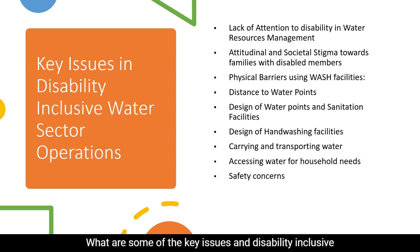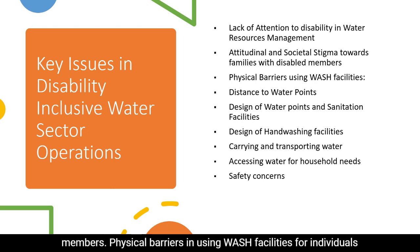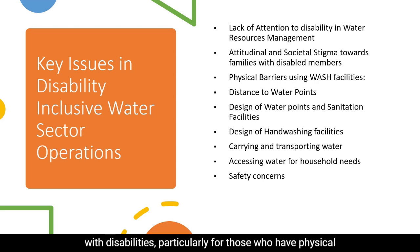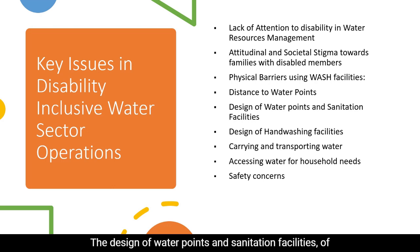What are some of the key issues in disability-inclusive water sector operations? These include lack of attention to disability in water resources management, attitudinal and societal stigma towards families with disabled family members, physical barriers in using WASH facilities for individuals with disabilities — particularly for those with physical disabilities, but also for blind people or people with low vision. Distance to water points can make WASH inaccessible, and the design of water points and sanitation facilities can pose significant barriers.